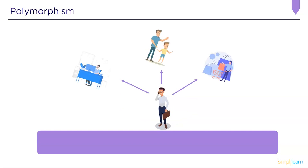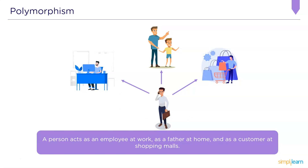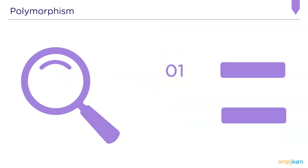A real-life example of polymorphism: one person performs multiple roles — at work he is an employee, at home he is a parent, and at the mall he is a customer. So one person acts as an employee, father, and customer depending on context. This is a decent example of polymorphism.